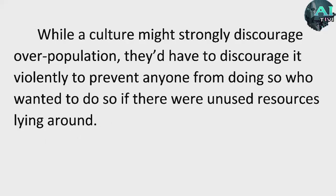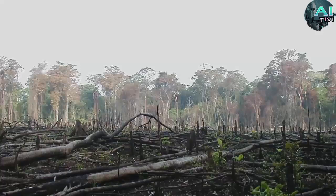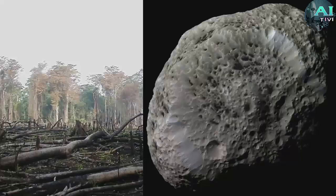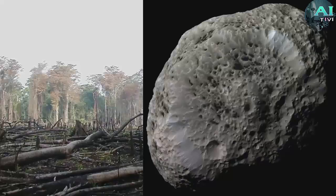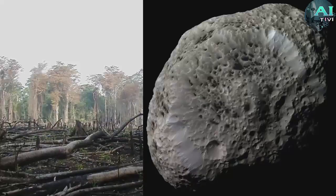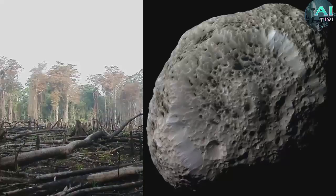B: While a culture might strongly discourage overpopulation they'd have to discourage it violently to prevent anyone from doing so who wanted to do so if there were unused resources lying around. Now let's qualify this. It's one thing to tell people they can't knock down a forest to make farmland, it is another thing to tell people they can't claim an uninhabited asteroid to mine. For the Dyson Dilemma we're not talking about seizing other people's planets, we're not talking about knocking over forests, we're talking about deconstructing lifeless hunks of rock around stars. Those aren't eternal stockpiles for future usage. Asteroids eventually fly off into the void or fall into their own sun which burns through mountains worth of hydrogen every day producing wasted energy that just goes spinning off into the void. It's hard to make the argument that those should be left alone.